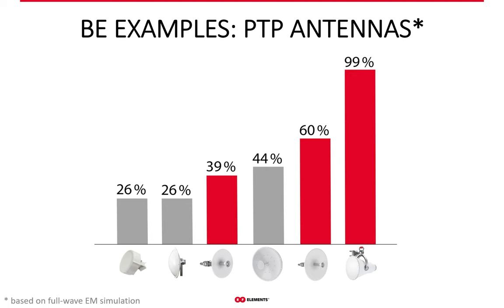With 99% beam efficiency, it is the best performing antenna on the market in terms of noise suppression. The good thing is you can use ultra horn not only for point-to-point, but also for point-to-multipoint coverage. With the option of tilting the antenna down, you can dynamically adjust the coverage. So it's really a very versatile tool, and the best tool in terms of noise suppression.